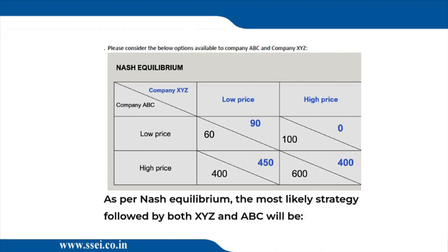Maybe the answer could be derived from this only. But if we go for option C, we have not decided still for ABC. For XYZ it's decided — XYZ will charge a low price — so the answer can be either A or C. Now let's decide for ABC.